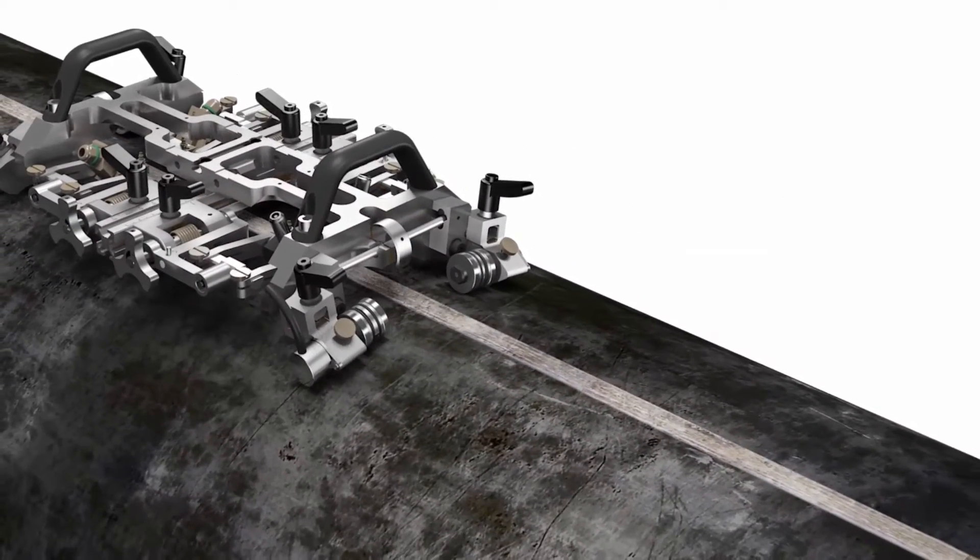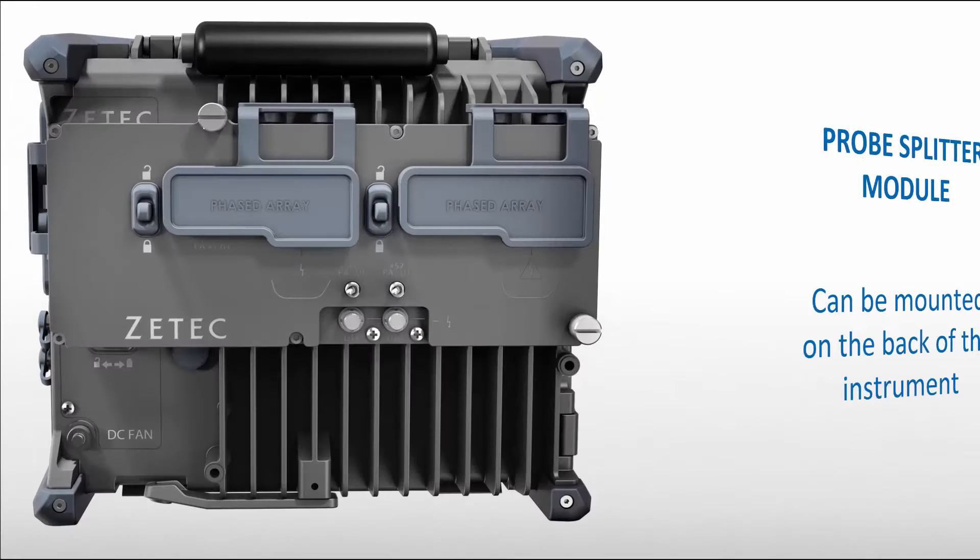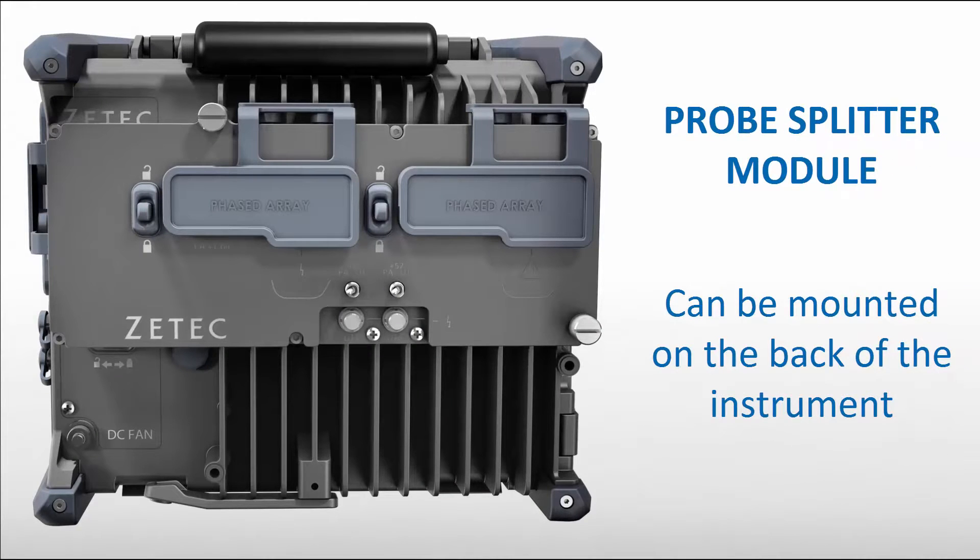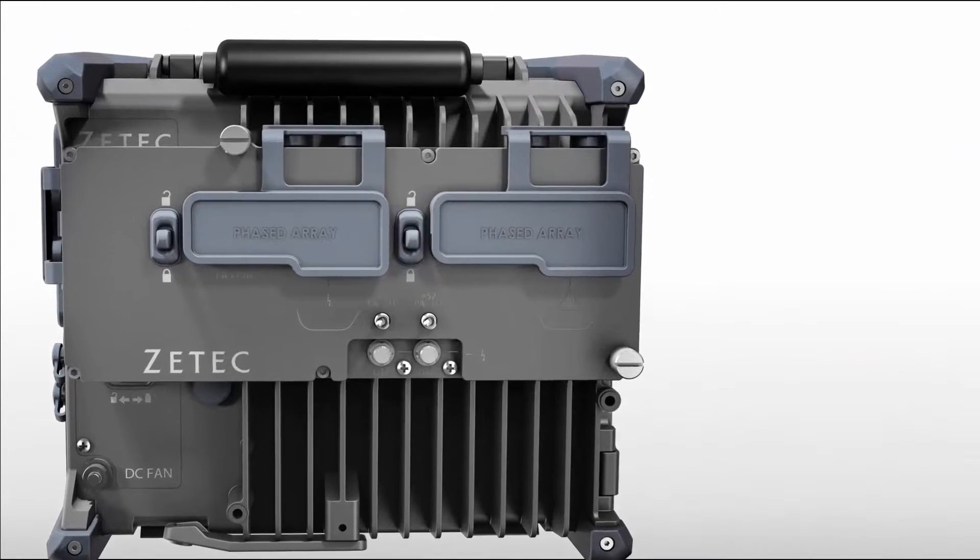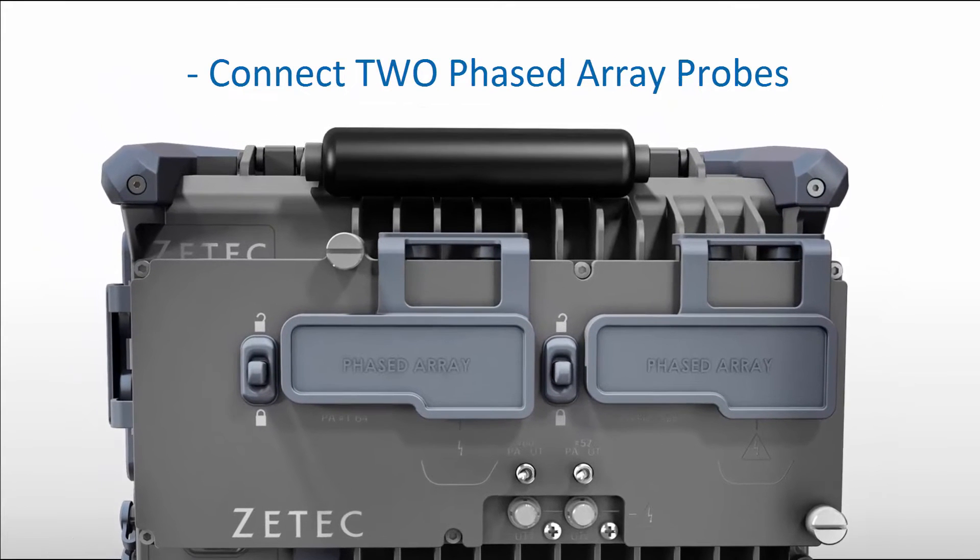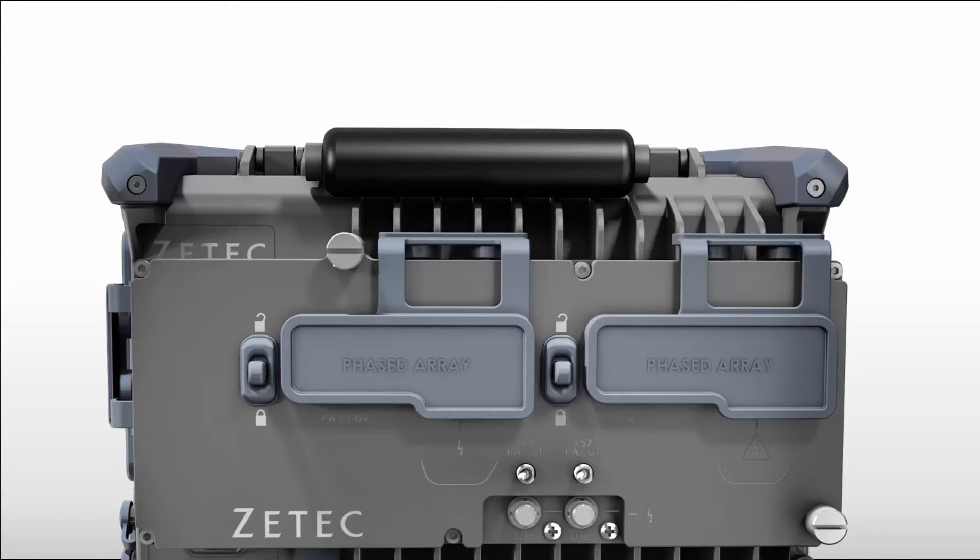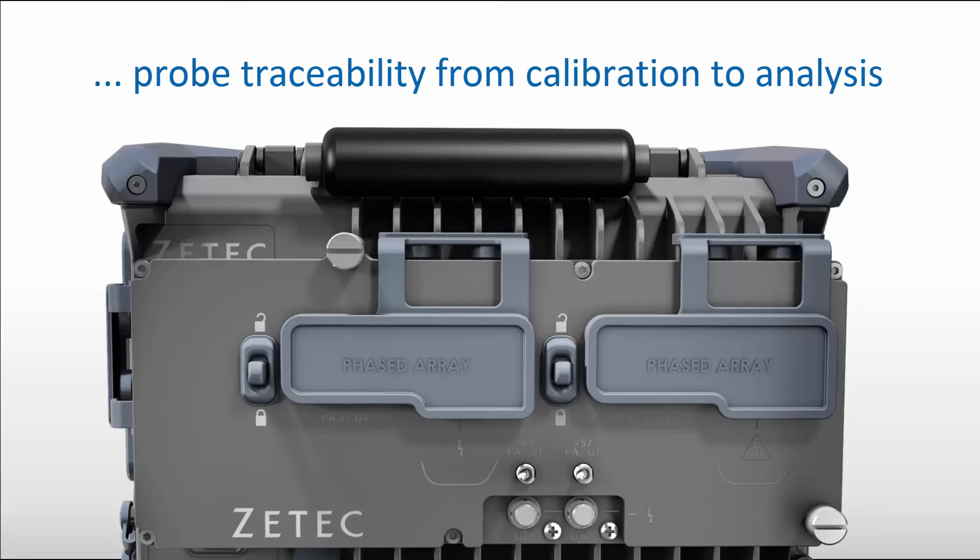The probe splitter module can be conveniently mounted on the back of the TOPAS-16 unit to enable the connection of two phased array probes. The TOPAS-16 unit will detect the dialog information from the two phased array probes and ensure probe traceability from calibration to data analysis.